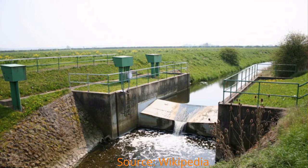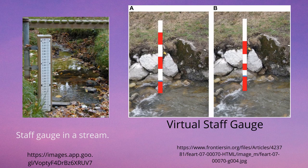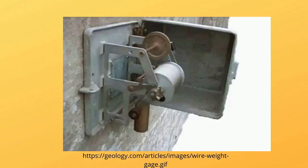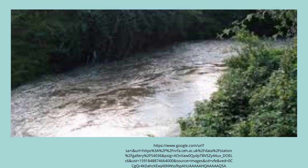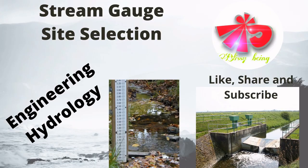The banks and beds of the river should be free from growth of vegetation, boulders, and other obstructions. Likewise, the parts of the river should have the most regular cross-section and steady flow, with the current normal to the metering section. Velocities ranging about 0.3 to 1.2 meters per second should be selected.